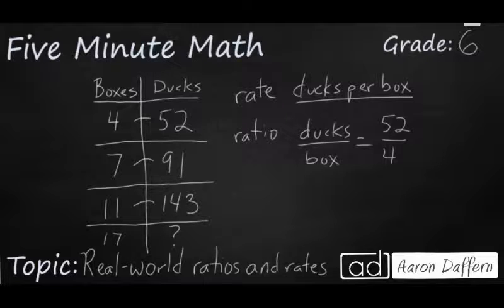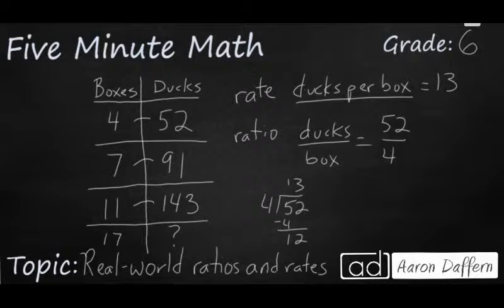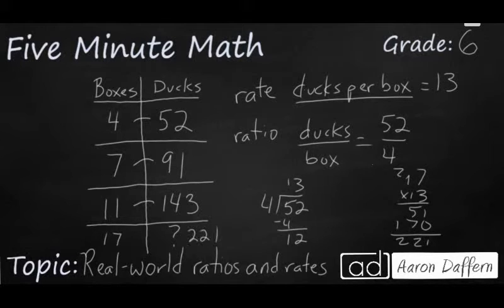Well, that's simply a division problem that we need to finish. So 4 goes into 52 and that's going to be 13. So it looks like our rate is going to be 13 ducks per box. And so we can multiply that by 17. And we can say 17 times 13. Well, that's going to get us 221 ducks in 17 boxes.